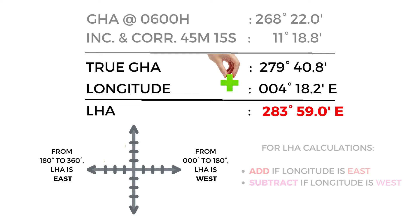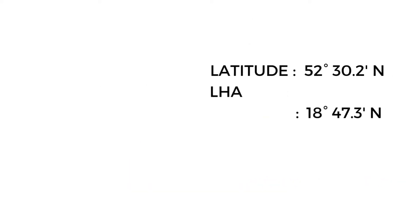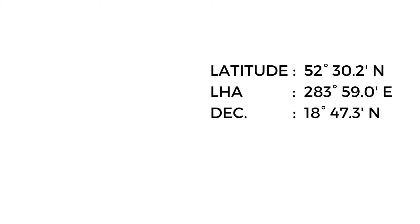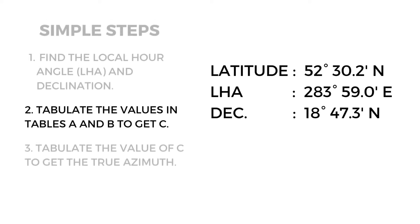Since our LHA is between 180° and 360°, we will name our LHA east. To sum up, we now have our latitude, LHA, and declination. The next step is to tabulate the values in Tables A and B to get C.